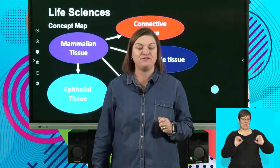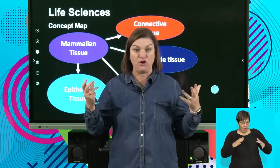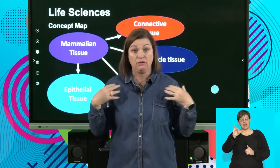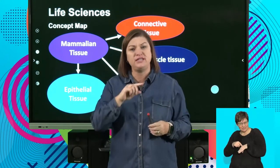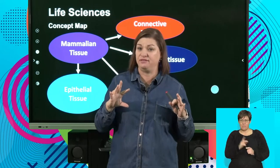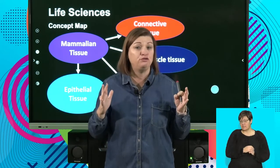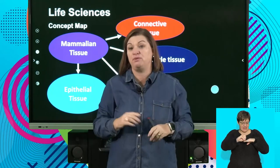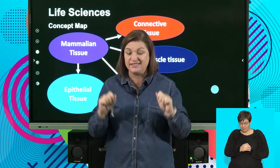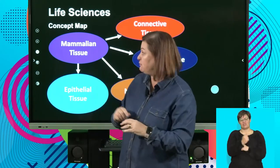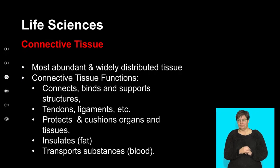Welcome back, life sciences. Get the blood flowing, get the oxygen flowing — mammalian tissue can be quite a ride. We've looked at epithelial tissue as the first tissue, which was quite easy to identify. Basically, like Lego bricks, you have a base and put cells one on top of each other. The next tissue we're going to look at is somewhat more difficult to identify because the structure is slightly different.